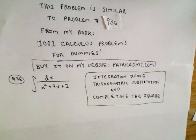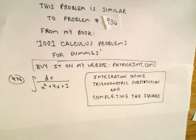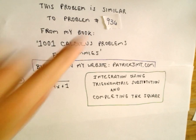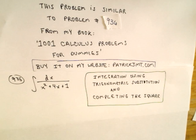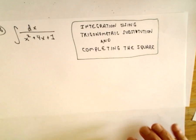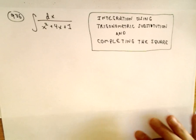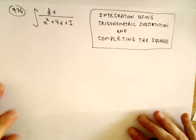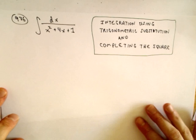This is going to be an integration problem using trigonometric substitution and completing the square. It's going to be similar to problem number 936 from my book, 1001 Calculus Problems for Dummies, which you can buy on my website, PatrickJMT.com, if you want to see some extra examples.